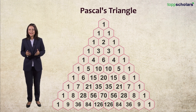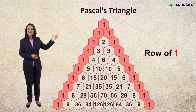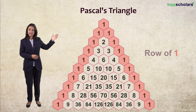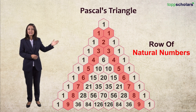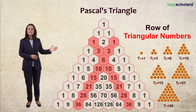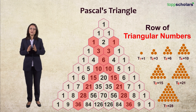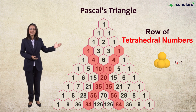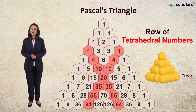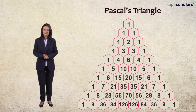There's more to it. The first diagonal is just a row of 1s. The second diagonal is of natural numbers. The third diagonal is a set of triangular numbers, and the fourth diagonal is of tetrahedral numbers.